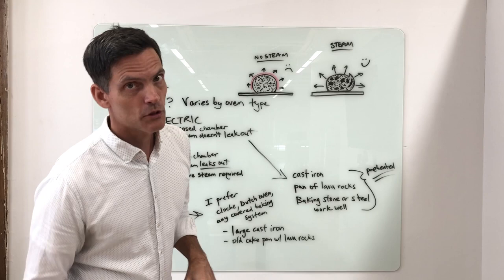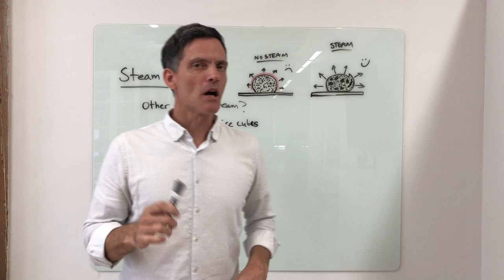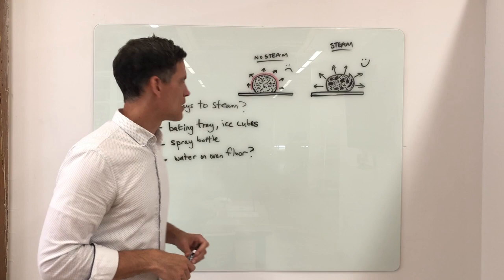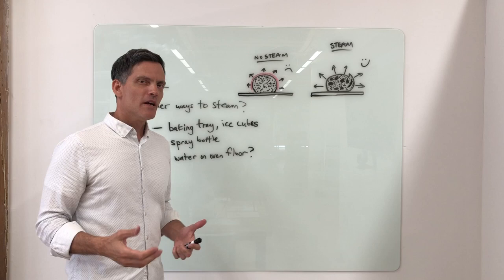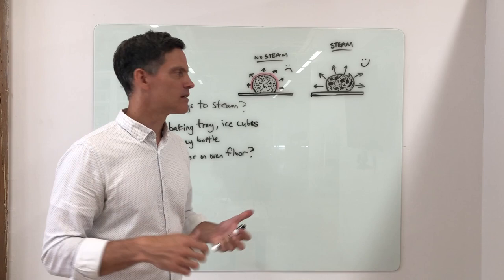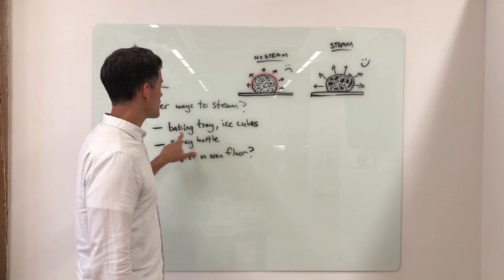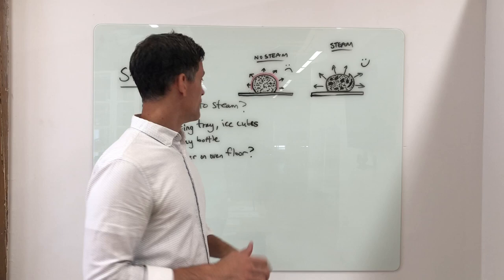There are a couple other ways that you can steam, but I generally don't think they work that well. Some people like a baking tray and put ice cubes on it. I used to do that, but the problem is the baking tray doesn't have much thermal mass. When you add the ice cubes, you get some sizzle for a second but then it dissipates and doesn't produce enough steam. I don't think that's a viable way for producing steam at home.